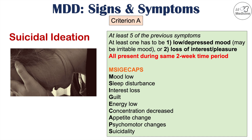A way to remember the signs and symptoms of major depressive disorder is the mnemonic MSIGECAPS: M for mood that's low, S for sleep disturbance, I for interest loss, G for guilt, E for energy loss, C for concentration decreased, A for appetite change (weight loss or gain), P for psychomotor changes (slowed down or restless), and S for suicidality. Patients must have at least five of these, all present most of the day nearly every day in the same two-week period, to meet Criterion A.